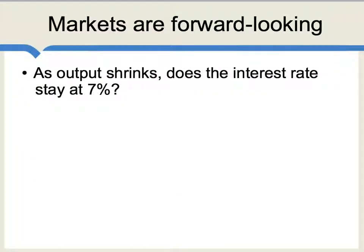As we have tax hikes and spending cuts, output shrinks and the economy contracts. So ask the basic question: is that borrowing interest rate going to stay at 7%? Probably it won't — it will go up to 8% or 9%, or whatever the case may be. The higher that number gets, the greater the problem of debt service becomes over time. Markets are forward-looking: as the economy is shrinking, the debt burden in percentage terms becomes higher, and that raises the borrowing rate even more, and that makes the economy shrink even more. There is here a negative dynamic.